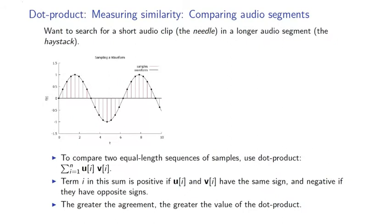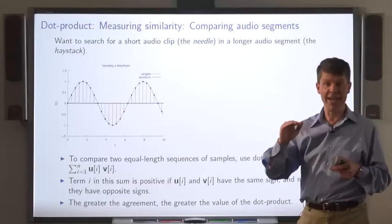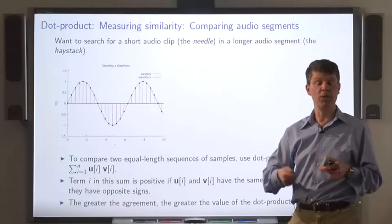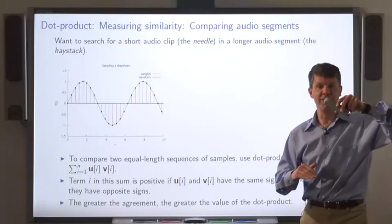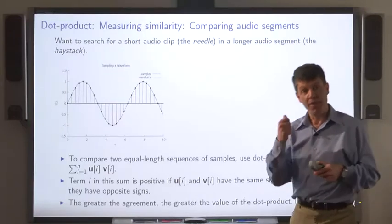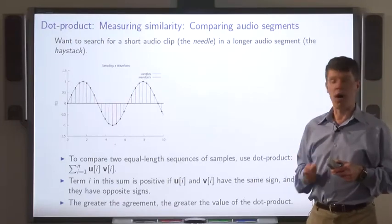So we can compare, let's say, two equal length audio segments by taking the dot product. At a particular moment, if both of them are positive or both of them are negative, that will contribute positively to the dot product. If one is positive while the other is negative, that will contribute negatively. So the higher the dot product, the greater the similarity between these two audio segments.